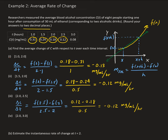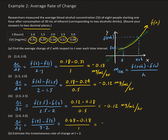For the last interval, delta C over delta T equals f of 3 minus f of 2, divided by 3 minus 2. So f of 3 is 0.08, minus f of 2 which is 0.18, divided by 1. We end up getting negative 0.10 milligrams per milliliter per hour.